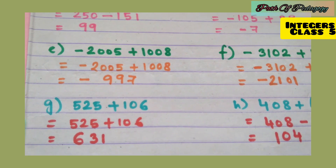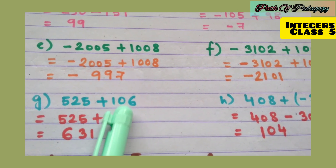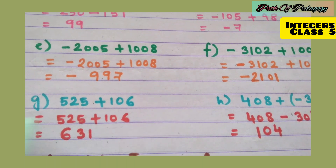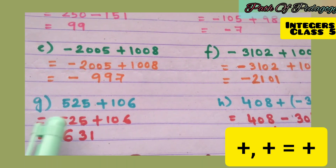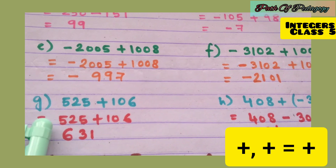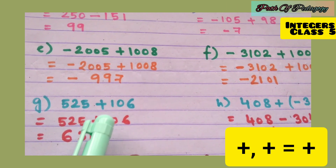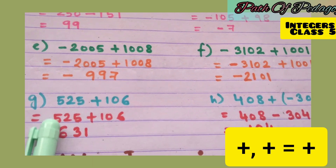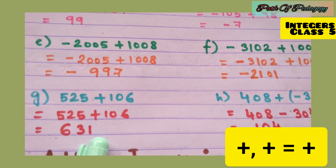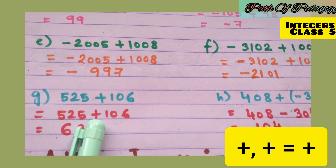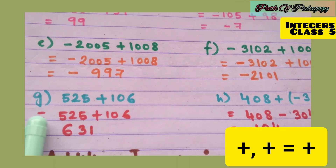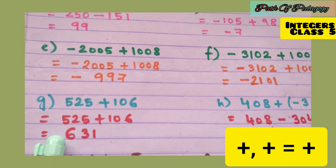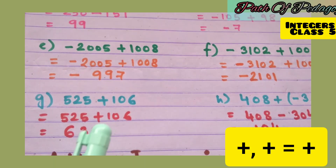Question g: 525 + 106. Both are positive — plus plus is always plus — so we add: 525 + 106 = 631. The bigger number is 525 with a plus sign, so the answer is positive — 631.